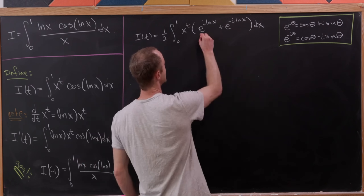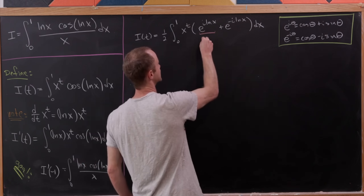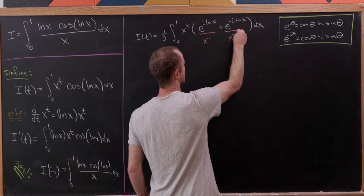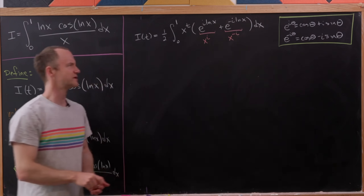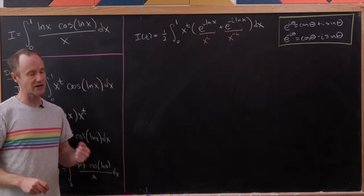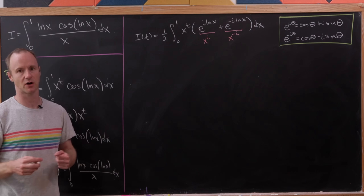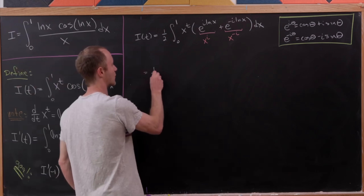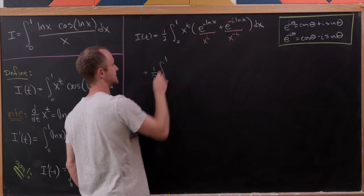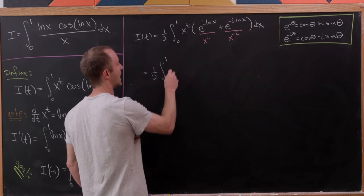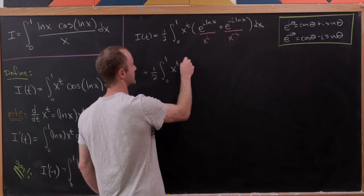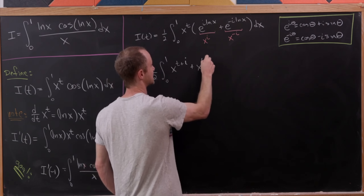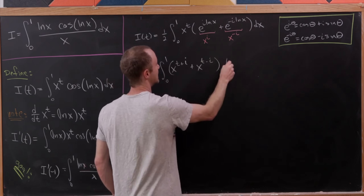These are actually quite nice: the first term is x to the i power and the next is x to the minus i power, using logarithm rules and the fact that the natural log and the exponential are inverse functions. So now we have one half times the integral from 0 to 1 of x to the t plus i plus x to the t minus i, dx.